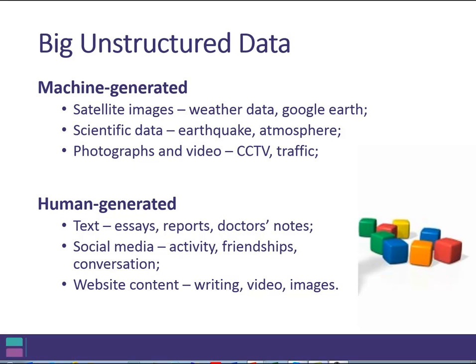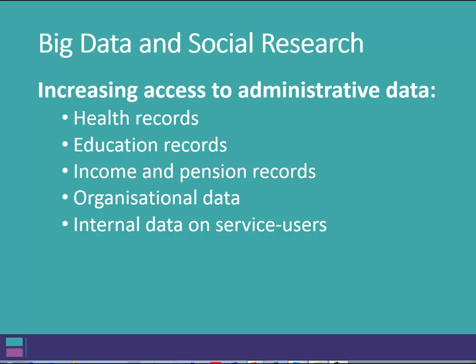Human generated data could include textual data, essays, reports, doctor's notes, open fields in a database. Or social media activity, connections between people and what they're posting on social media. And then more broadly, website content which could include text, video and images. And it could be data about a service or an organization.